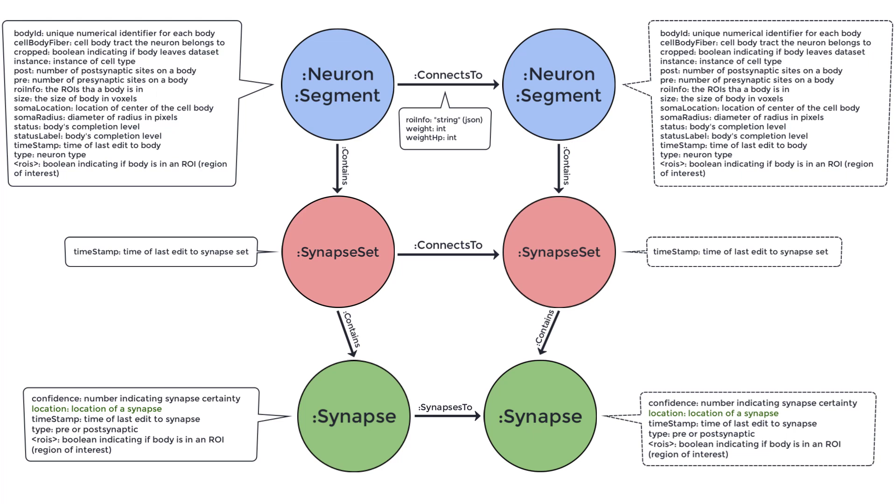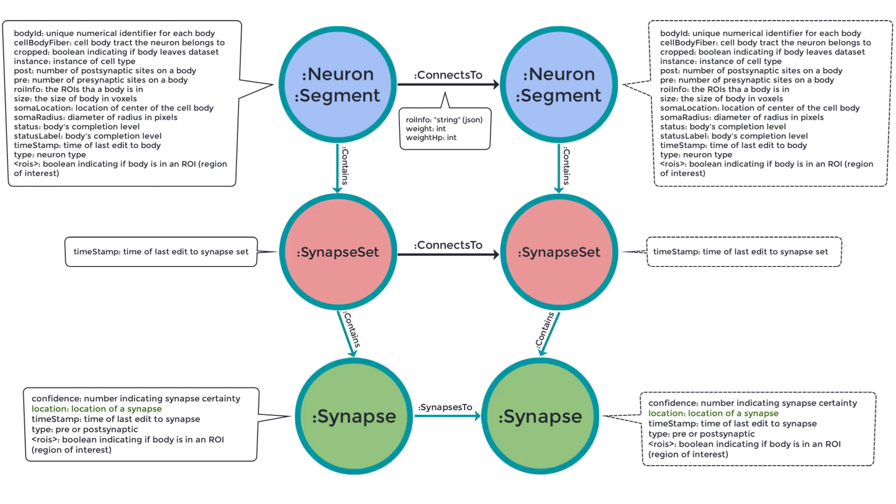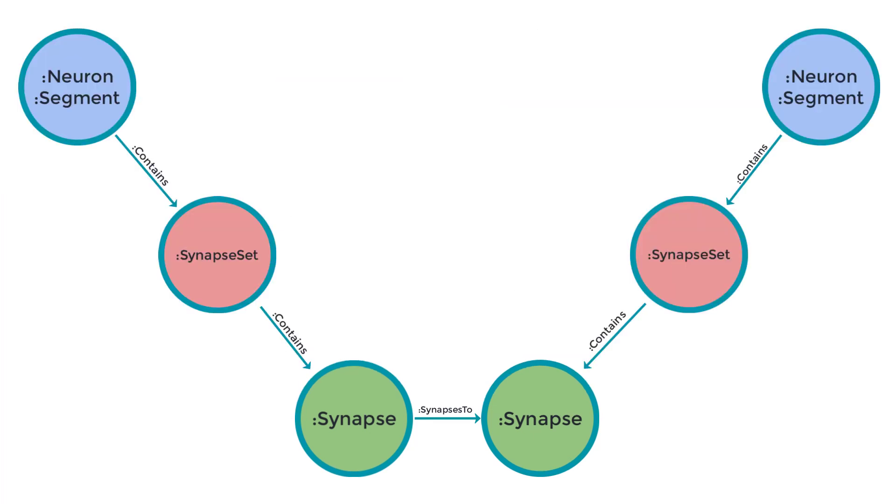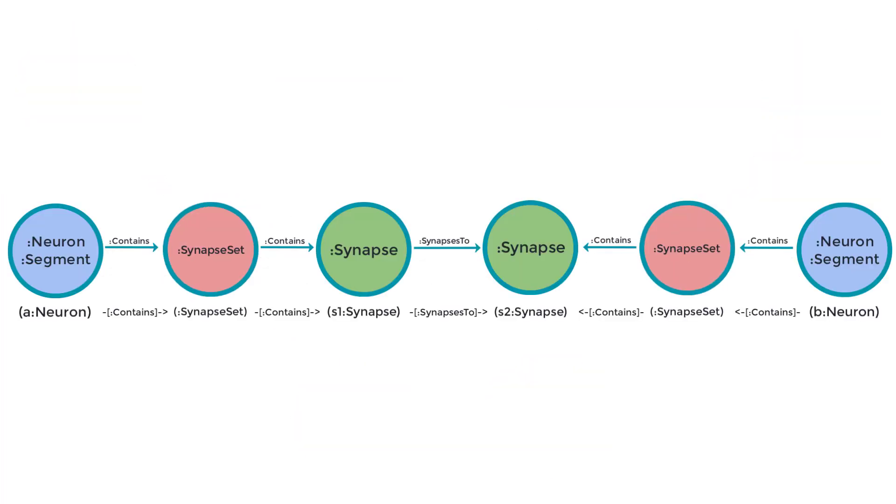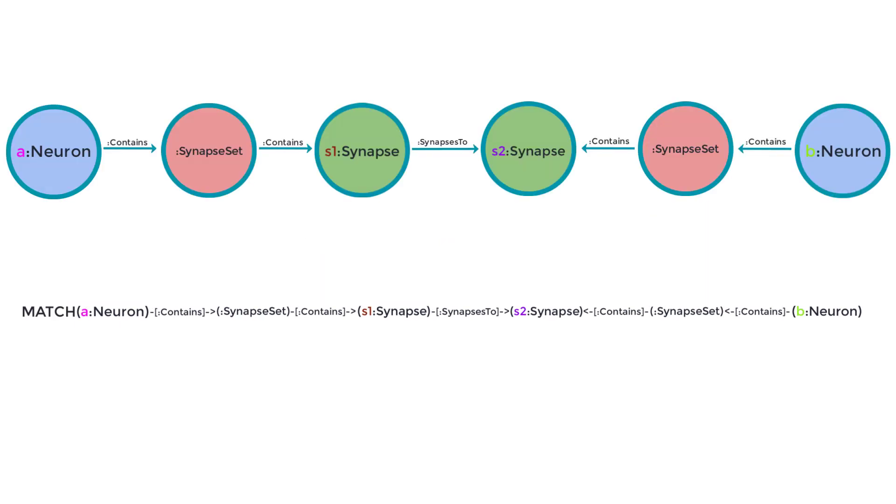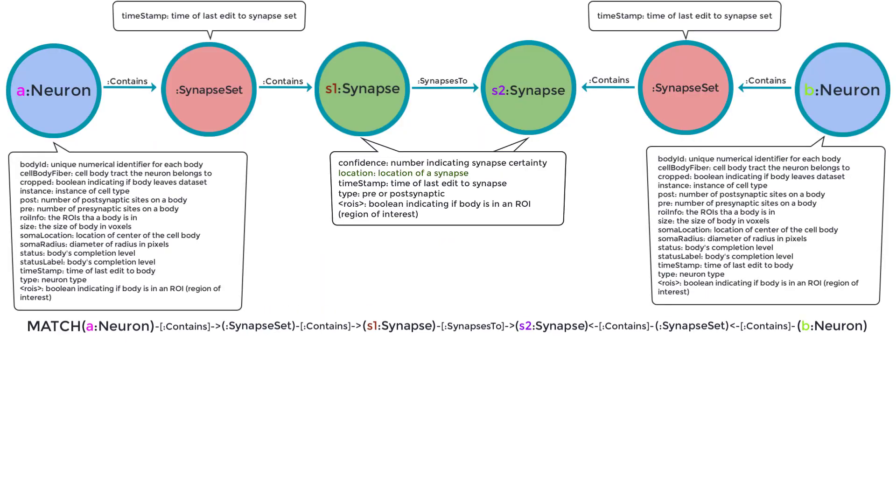And again, to make this pathway into a match line, we simply turn the graph into text, and put it all together with match at the beginning. Here are the properties that we can use for each of these nodes. We can indicate that neuron A is the KCG that we found, and that neuron B is the M-bond number 5, using the body ID property of neuron nodes. And now, we want to report the location of PSDs on neuron B that receive information from neuron A.